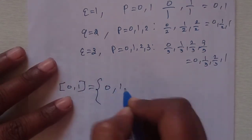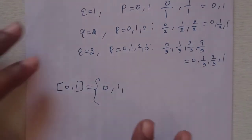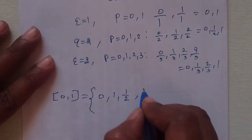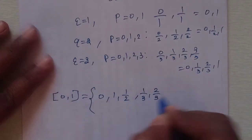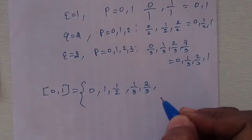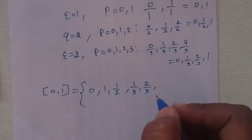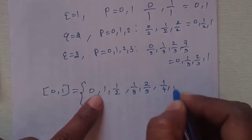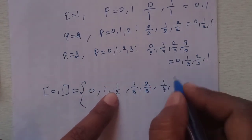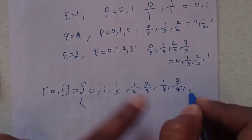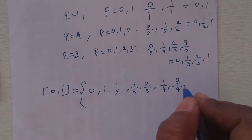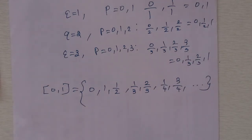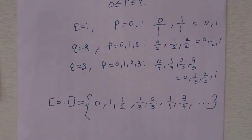We write 1 by 2 once. Then from Q equal to 3, we add 1 by 3 and 2 by 3, since 3 by 3 equals 1 which is already present. For Q equal to 4, 1 by 4 is new, 2 by 4 simplifies to 1 by 2 which is already present, 3 by 4 is new. Let's now look at the formal proof.